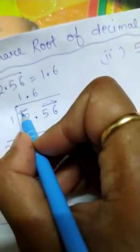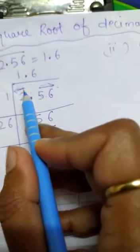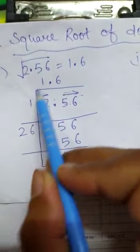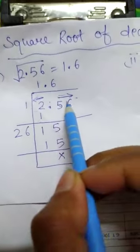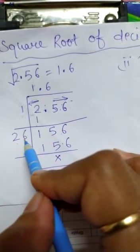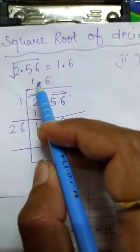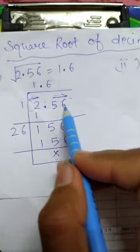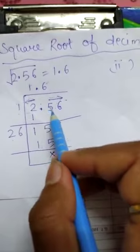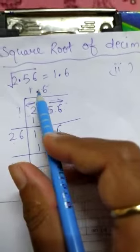Here, 56 forms one pair on the right side of the decimal, and 2 is single on the left. We start: 1×1=1, remainder is 1. Bring down 56 to get 156. Add 1+1=2, write 2 here. 26×6=156. When we take the first pair from the decimal part, we place the decimal point in the answer. The answer is 1.6.